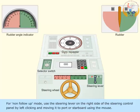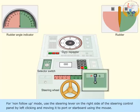For non-follow-up mode, use the steering lever on the right side of the steering control panel by left-clicking and moving it to port or starboard using the mouse.